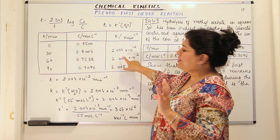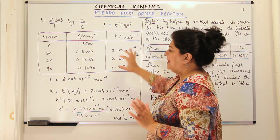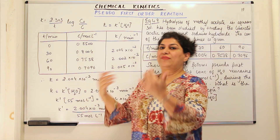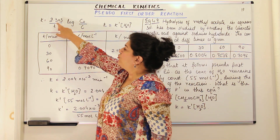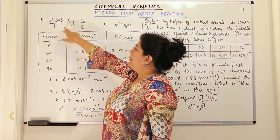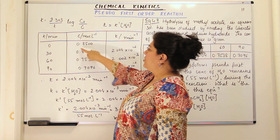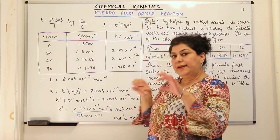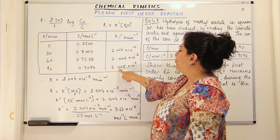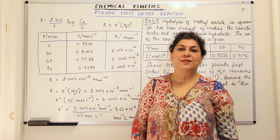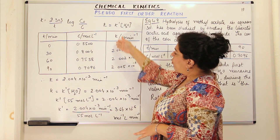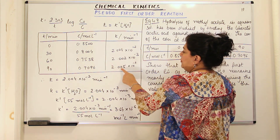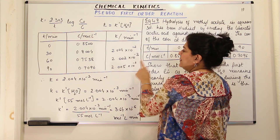For t = 90 minutes, we again write K = (2.303 / 90) × log(0.8500 / 0.7096). When you solve it, you again get K = 2.005 × 10⁻³ per minute. What do we notice from this? From all the values of K, up to the second decimal place they are all the same — 2.00 × 10⁻³.